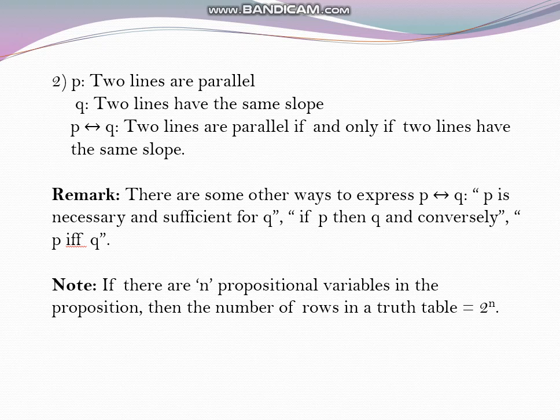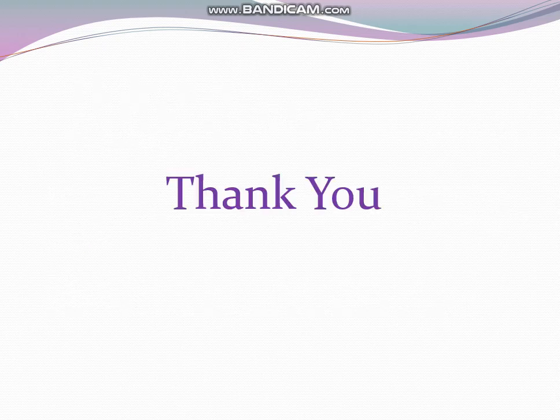Note that if there are n propositional variables in a proposition, the number of rows in the truth table is 2 raised to n. The compound statements we have covered are: negation, conjunction, disjunction, conditional statement, and bi-conditional statement. In the next video we are going to construct the truth tables for these compound statements. Thank you so much — see you in the next video.